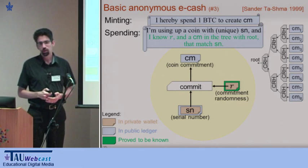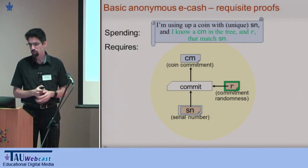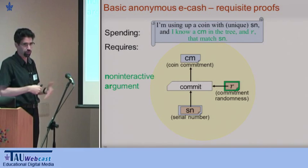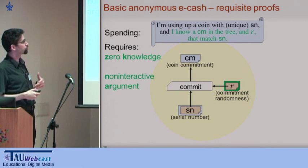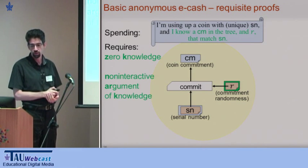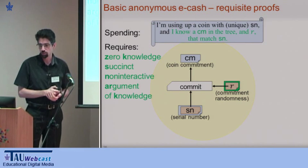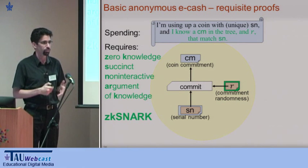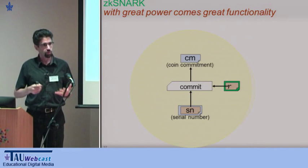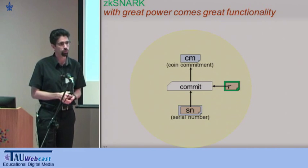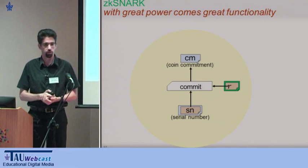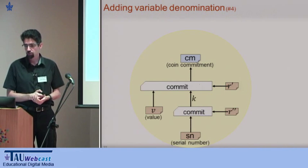Let's make sure we have the right kind of proofs to verify these statements. We need convincing arguments, they must be non-interactive so we can put them in the ledger, zero-knowledge to break the connection between using and creating a commitment, proof of knowledge because we're dealing with cryptographic statements, and succinct for efficiency. ZK-SNARK — check. And once we're using ZK-SNARKs, which are for NP statements, we have a lot more flexibility. We can create various other statements that give us additional functionality.